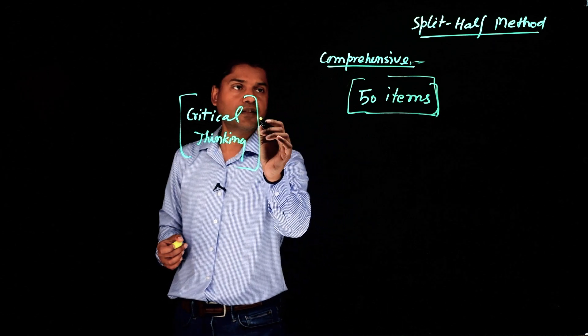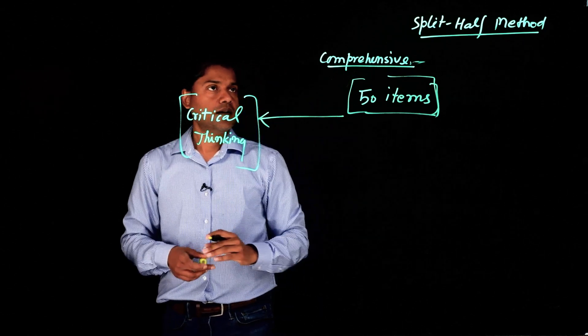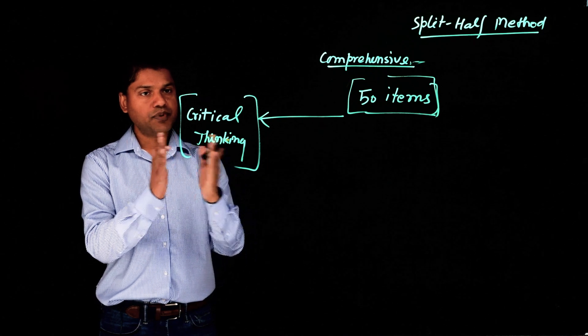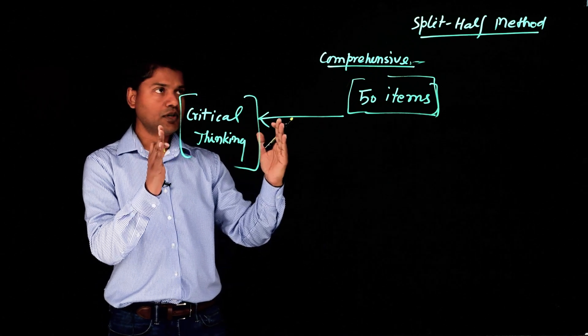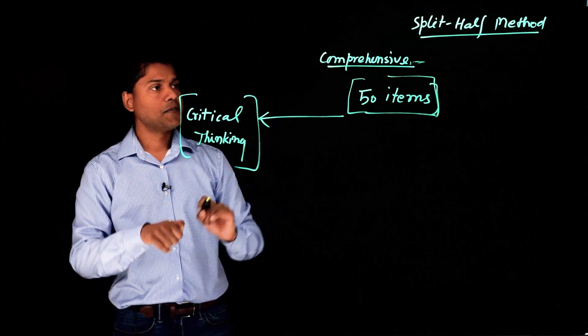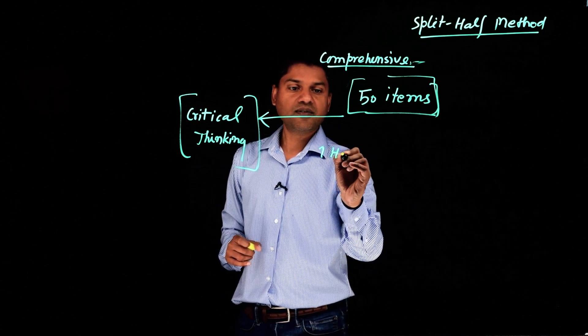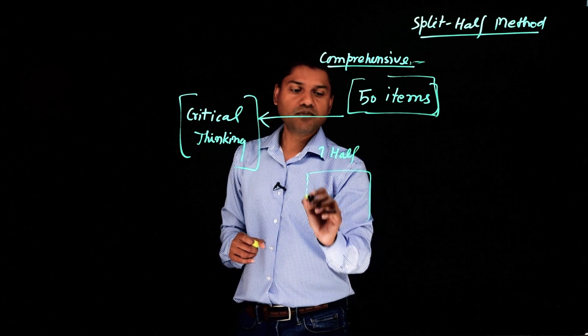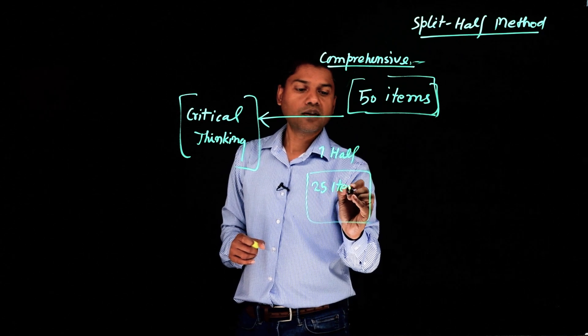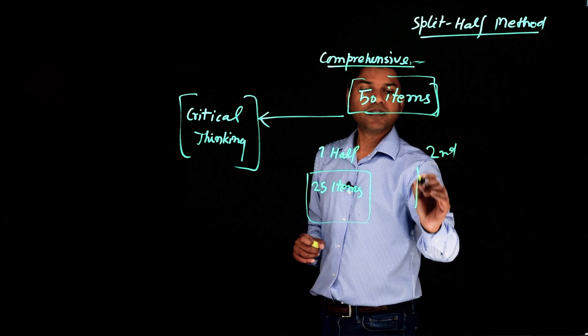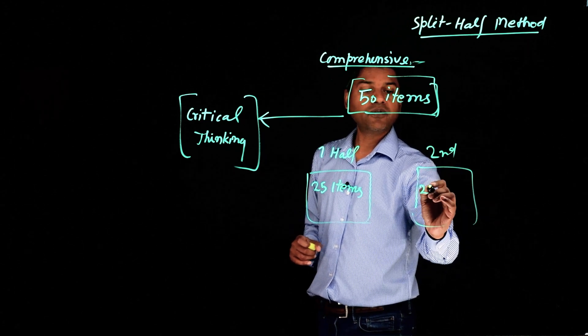So what I do, I split this 50-item comprehensive test into half. So the first half is 25 items. The second half, again, 25 items.